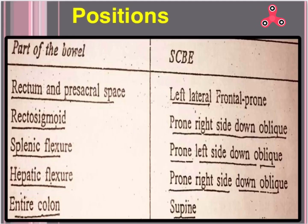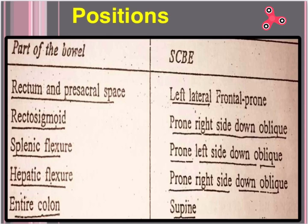Positions for different parts of the bowel: Rectum and presacral space — left lateral. Rectosigmoid — frontal prone. Splenic flexure — left side down (oblique). Hepatic flexure — right side down (oblique). Entire colon — supine.